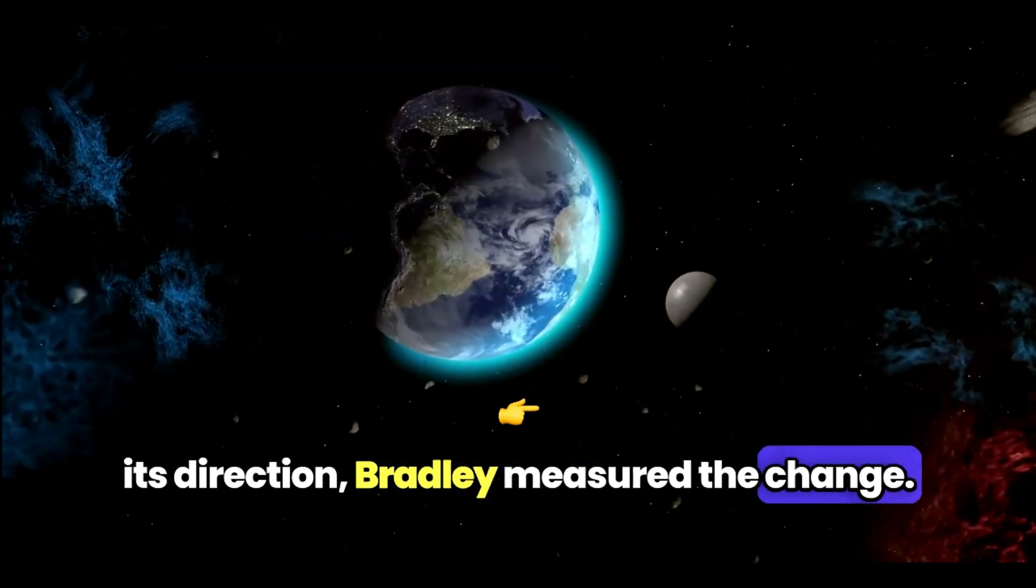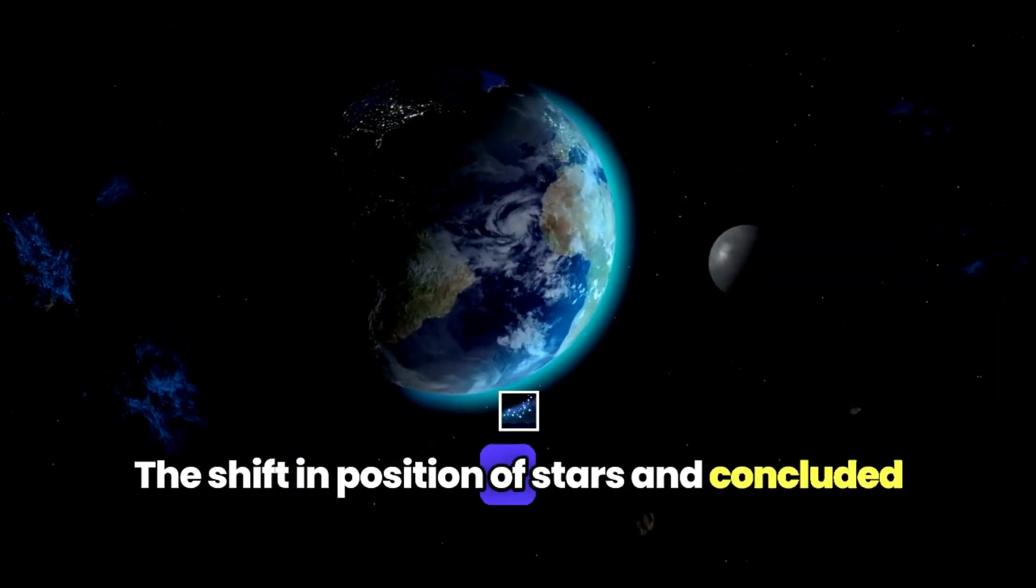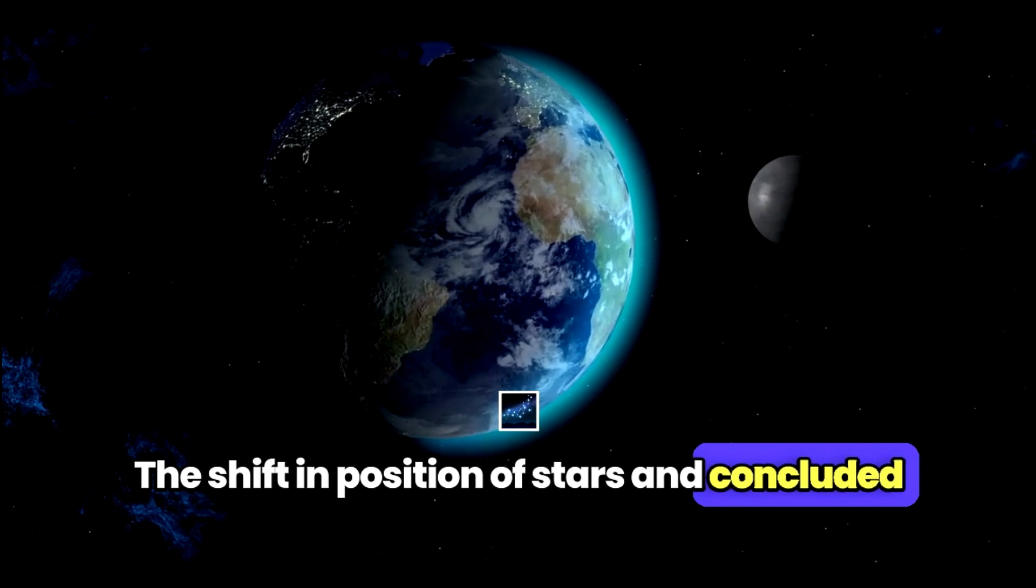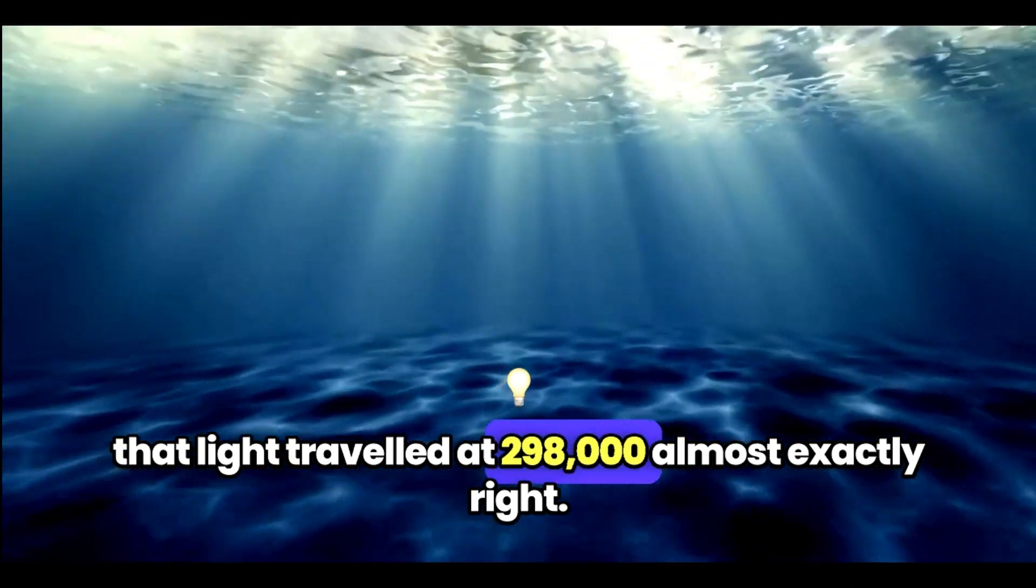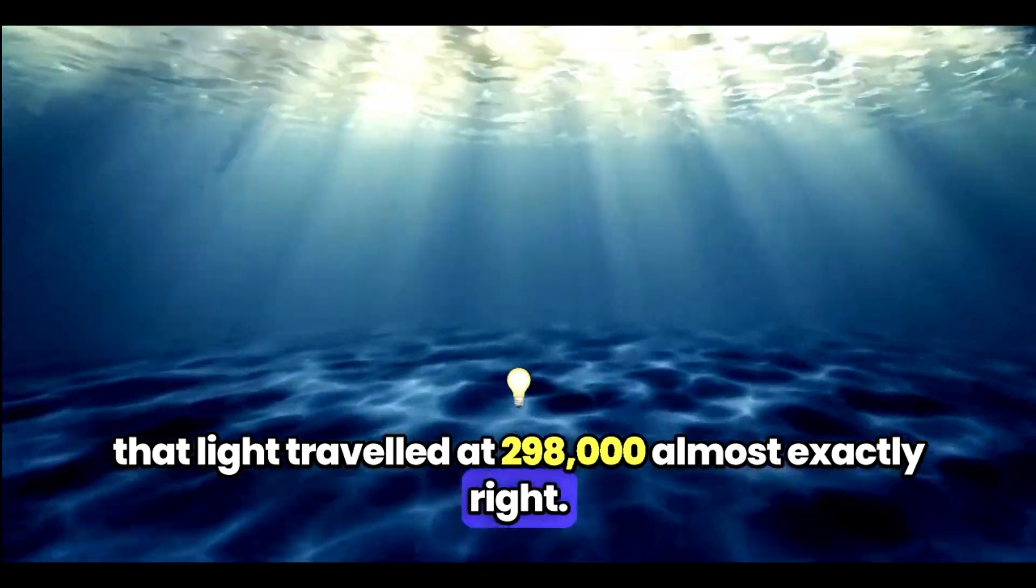Bradley measured the change, the shift in position of stars, and concluded that light traveled at 298,000 kilometers per hour. Almost exactly right.